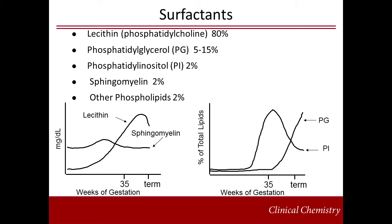Sphingomyelin accounts for approximately 2% of the phospholipids present in the surfactant. Lecithin is expressed as the lecithin to sphingomyelin ratio, or the LS ratio, in order to account for any amniotic fluid volume changes, because sphingomyelin remains largely constant in the third trimester of gestation and so it serves as an internal standard in the LS ratio.